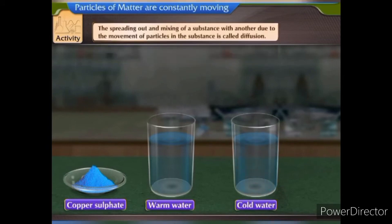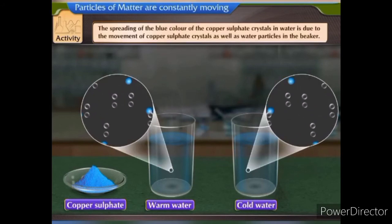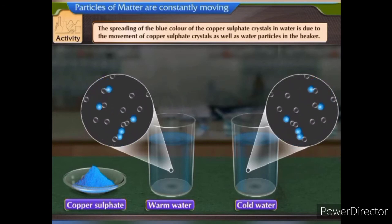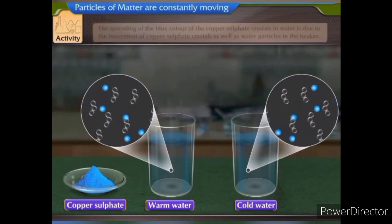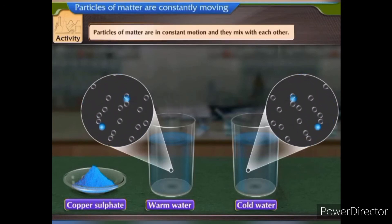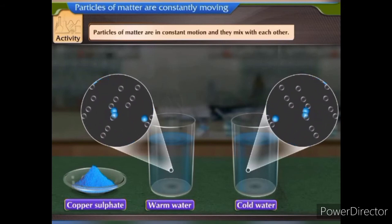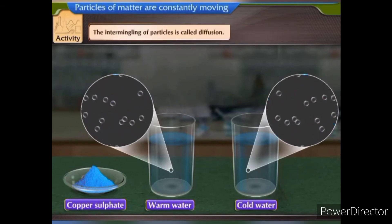This is due to diffusion of the copper sulphate crystals in water. The spreading out and mixing of a substance with another due to the movement of particles is called diffusion. The spreading of the blue colour is due to the movement of copper sulphate as well as water particles. This shows that particles of matter are in constant motion and they mix with each other. This intermingling of particles is called diffusion.